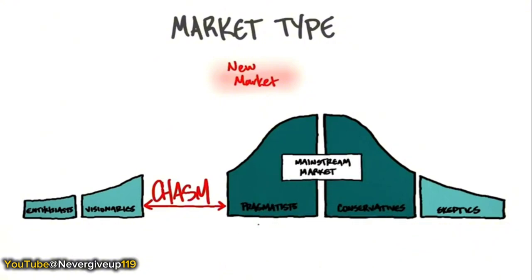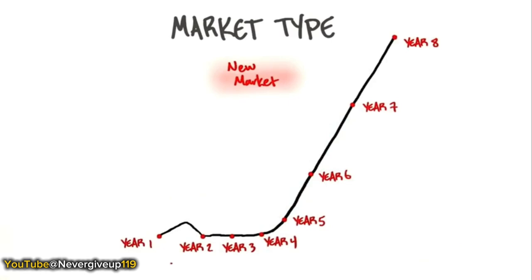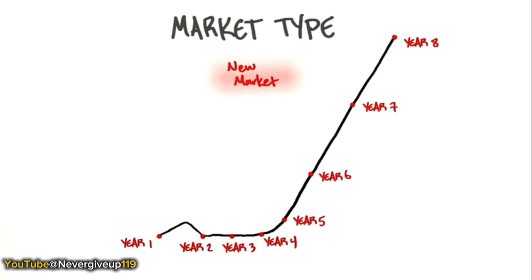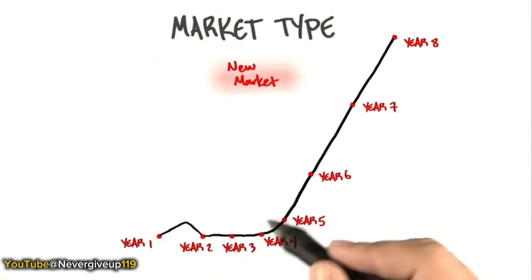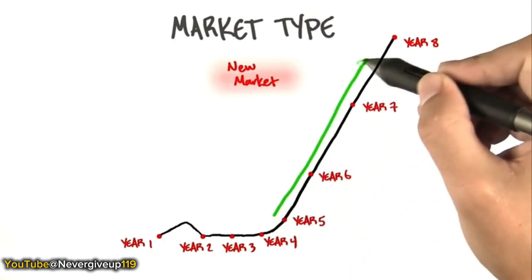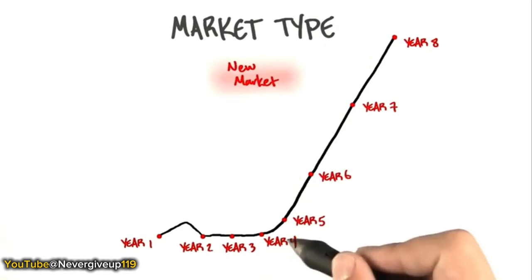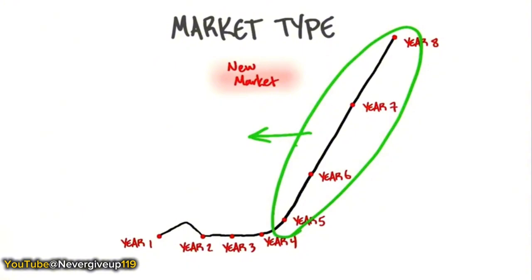Here's what that hockey stick sales curve looks like. You have the early people you're selling to, and one mistake entrepreneurs make is seeing that slope of early sales and thinking it's time to kick up spending — the board is happy, let's do advertising and staff up the company. But then it declines and people scratch their heads. What's going on is the mainstream market hasn't adopted. This valley of death of almost no sales can continue for years.